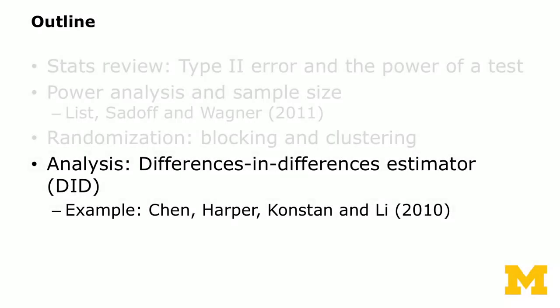The last module we're going to talk about is the differences-in-differences estimation. When you have experimental data, I'm going to use a field experiment that we conducted on MovieLens. This paper was published in the American Economic Review. It's a relatively small data set and will be part of our homework assignment. We'll look at applications of block random assignment and introduce a second estimator called the difference-in-differences estimator, sometimes called DIF-IN-DIF or DID.